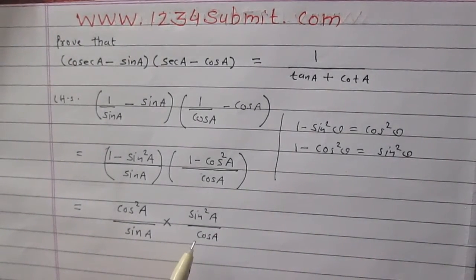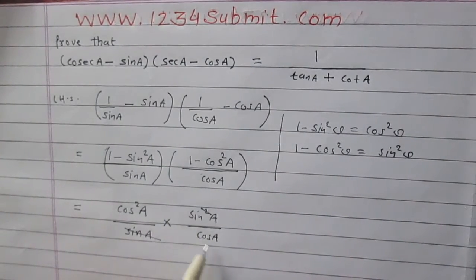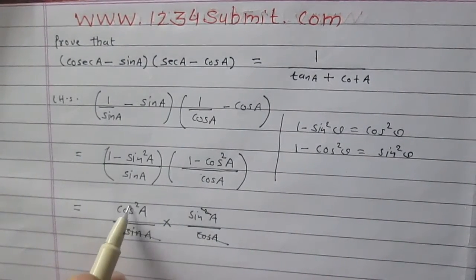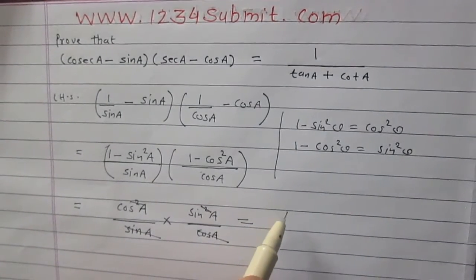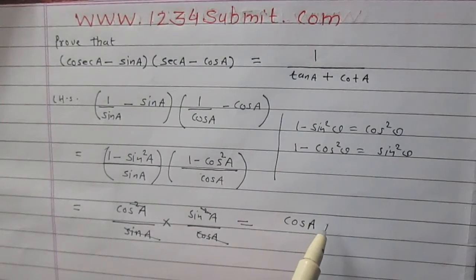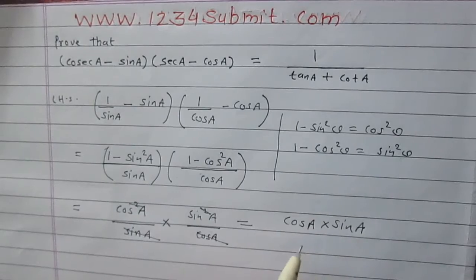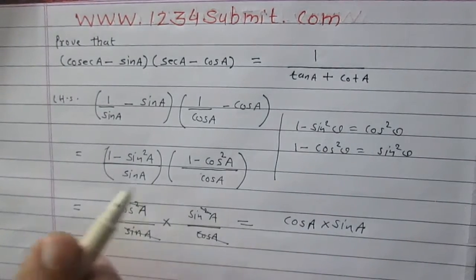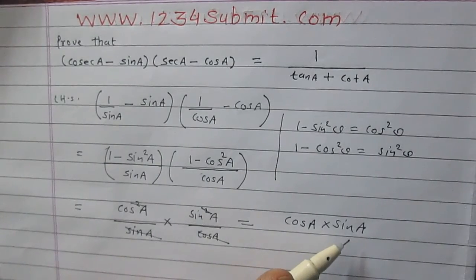After the reduction of terms, sin squared theta becomes sin A and cos A. We get cos A in multiplication with sin A. So the left hand side is reduced to cos A multiplied by sin A.